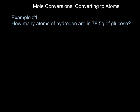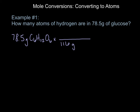Example 1 asks: how many atoms of hydrogen are in 78.5 grams of glucose? Start with what's given: 78.5 grams of glucose, which is C₆H₁₂O₆. To use the trick we've learned, I need to find how many moles are in 78.5 grams of glucose. I find the molar mass of glucose to be 180 grams per mole. Doing the math, I get 0.68 moles of glucose in 78.5 grams.